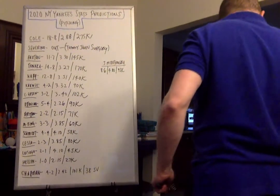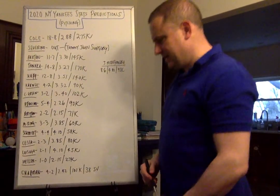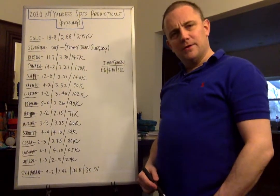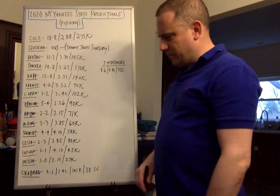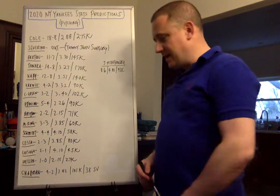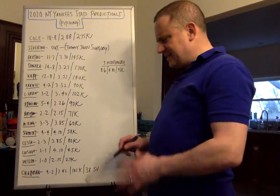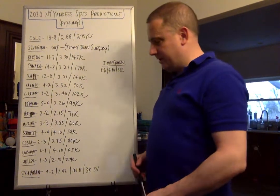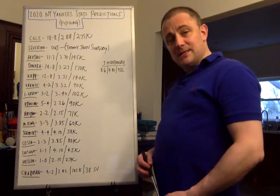Work our way from bottom to top. Closer, Aroldis Chapman. See him getting about a 4-2 record, and a lot of these relievers will be part of decisions at some point as well. I see him at about a 4-2 record, a 2.42 ERA. He had like a 2.02 or something like that last year. I see him still really good. This could be lower, but I think a 2.42 would be solid with 101 strikeouts and about 38 saves.